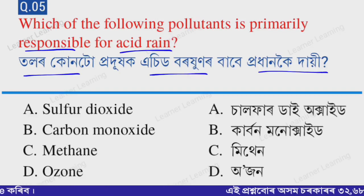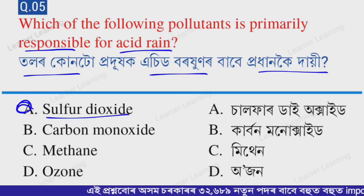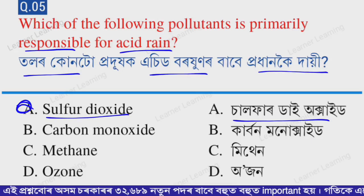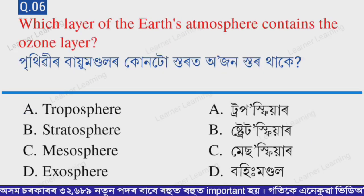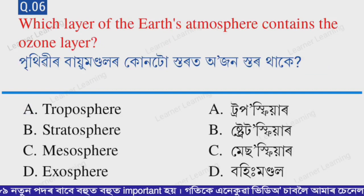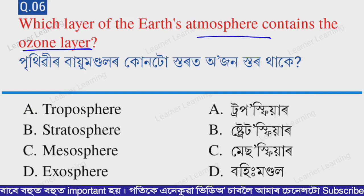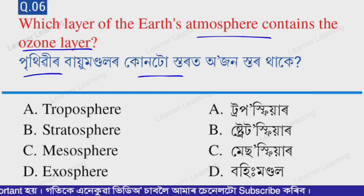The correct option is option C — carbon dioxide. Next question: Which layer of the Earth's atmosphere contains the ozone layer?